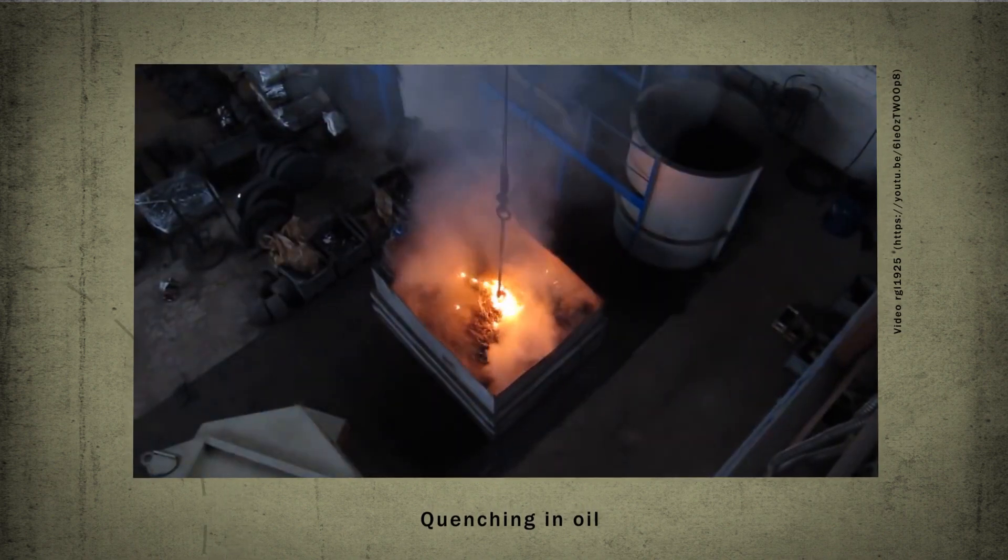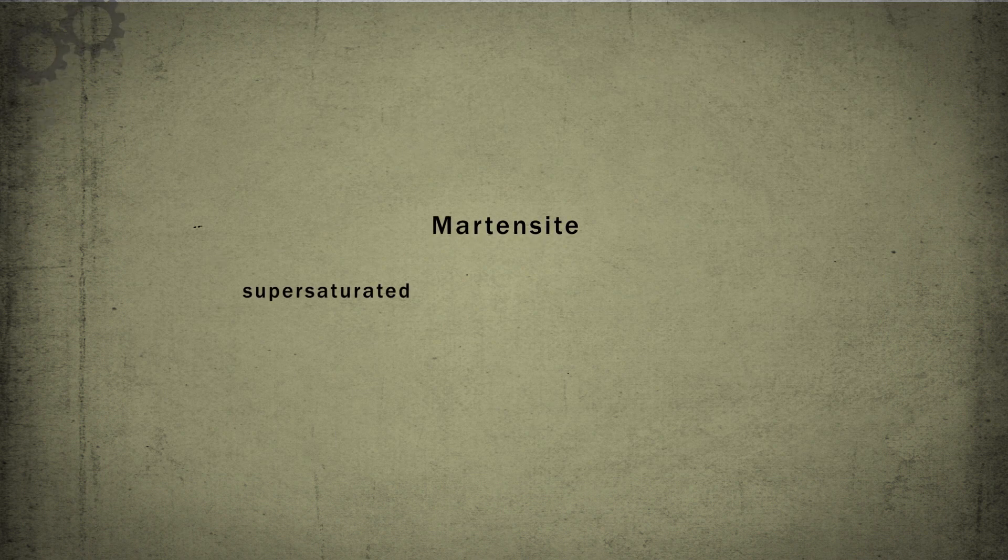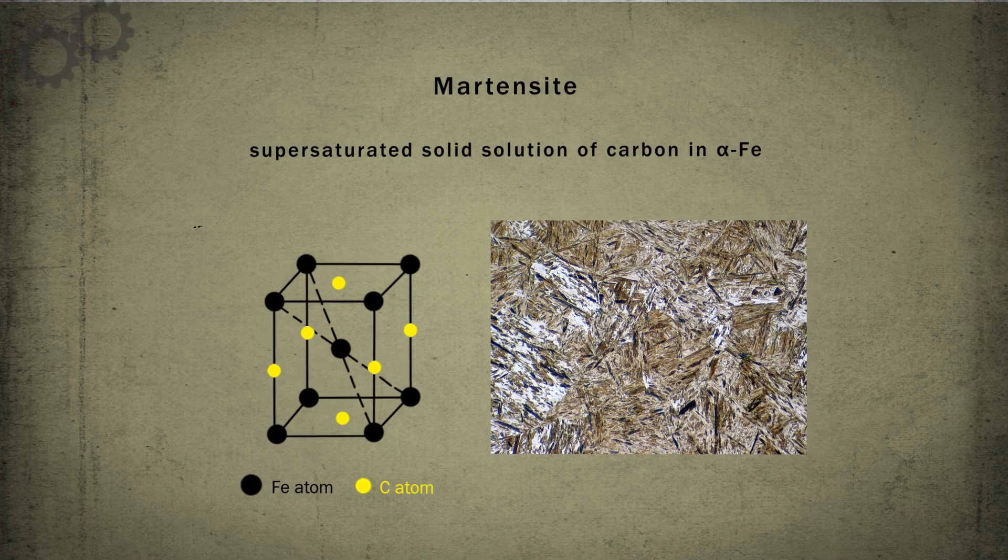The strong hardening of steels during quenching is due to the formation of martensite, a supersaturated solid solution of carbon in alpha ferrum.